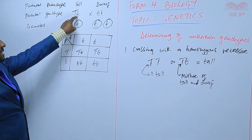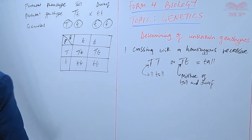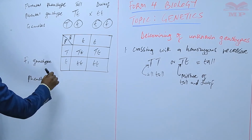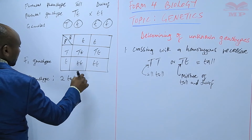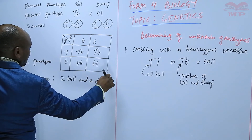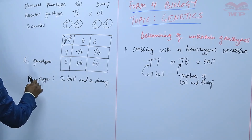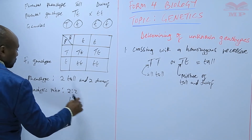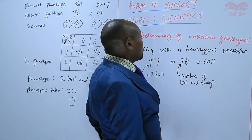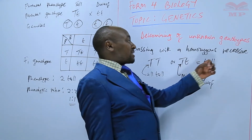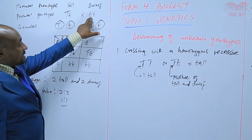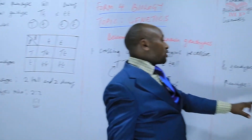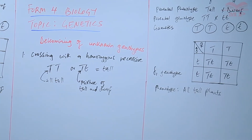So, if the original plant was in a heterozygous state, we get a mixture of tall and dwarf with a phenotypic ratio of two to two, simplified as one to one. That confirms that when determining an unknown genotype by crossing with a homozygous recessive: if the genotype was heterozygous we get a mixture of tall and dwarf; if the genotype was homozygous we get only tall plants. That is one of the ways of determining an unknown genotype.